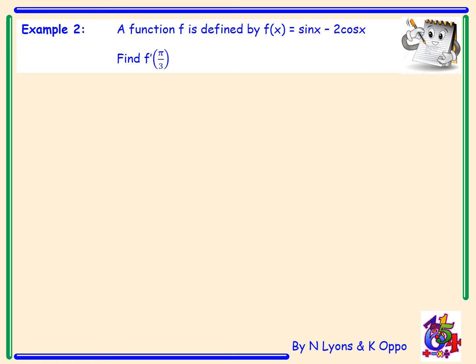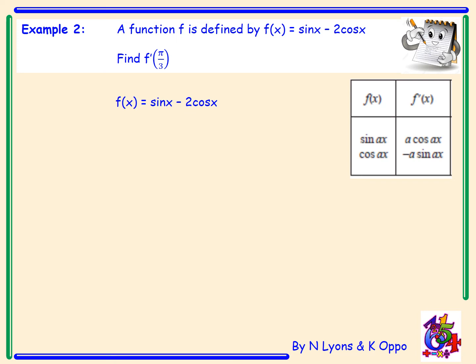Example 2: a function f is defined by f(x) = sin x - 2 cos x. We need to find f'(π/3). Let's take it a step at a time — first find the derivative. f(x) = sin x - 2 cos x is just a series of trig functions, so we differentiate each one individually using our table of standard derivatives.